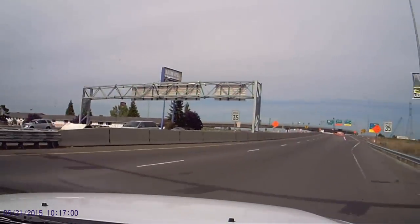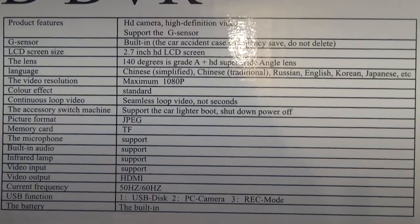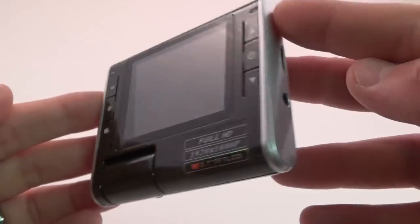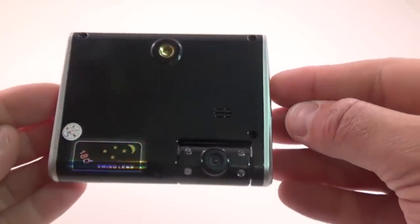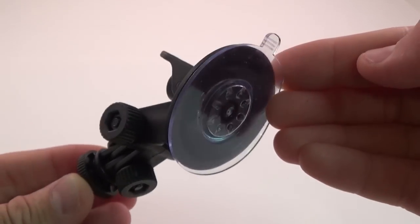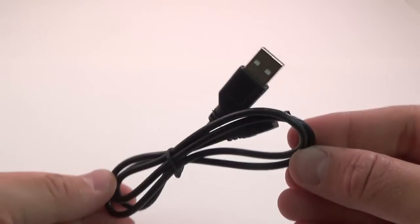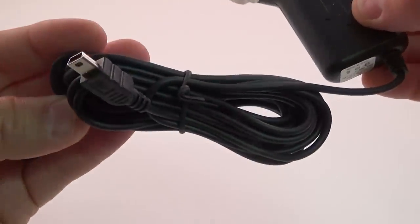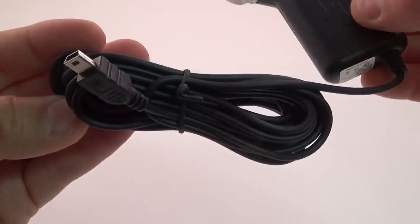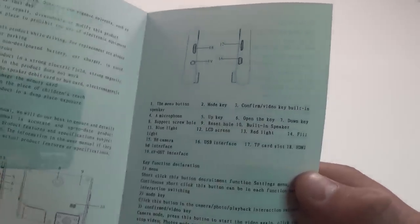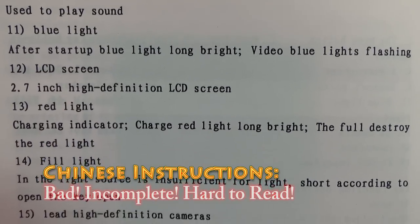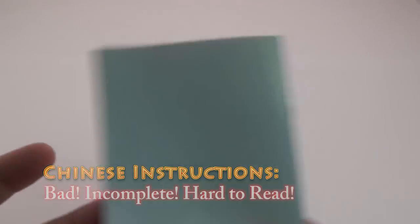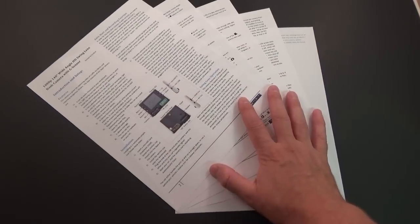Let's take a look at what you get. This dash cam comes in a box containing the 1080p HD swing lens dash camera, a suction cup mount, a USB cable for connecting the device to your computer, a cigarette lighter adapter with a 10-foot cord for powering the unit in your vehicle, and a set of manufacturer's instructions which are virtually impossible to decipher.